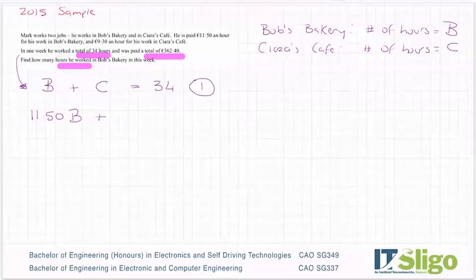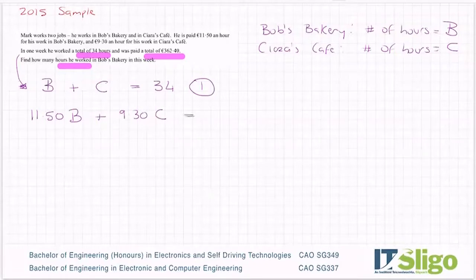In Ciara's Cafe, he gets paid 9.30 an hour. So it's 9.30C. So let the money equal the money. His total wages then is 362.40. And there's your second simultaneous equation.